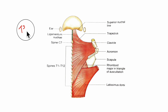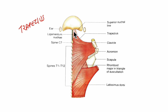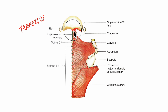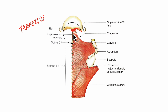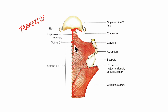First let us learn about the trapezius muscle. In this diagram you can see the origin of the trapezius muscle — that is mainly from the medial one-third of the superior nuchal line, from the external occipital protuberance, from the ligamentum nuchae, from the C7 spine, and the T1 to T12 spines as you can see right here.